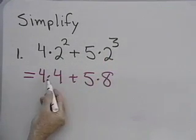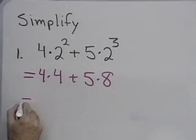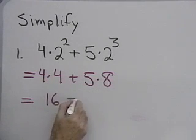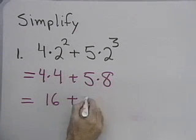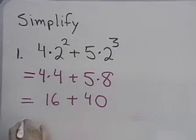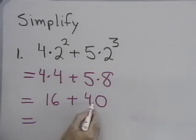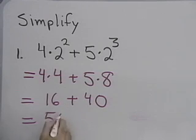Now I have addition and multiplication, so what I want to do is multiplication first. 4 times 4 is 16, 5 times 8 is 40. Now I'm left with an addition problem. 16 plus 40 is 56.